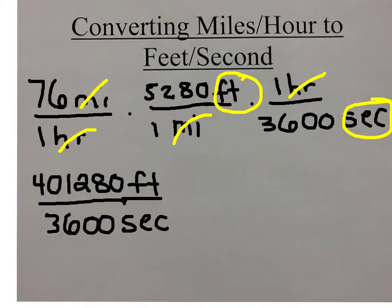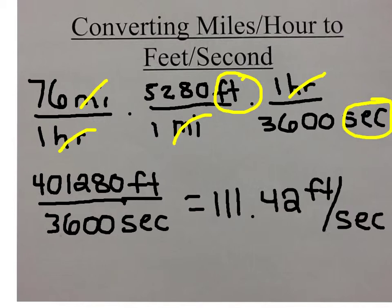When you multiply 76 by 5,280, you get 401,280 feet over the original 3,600 seconds. When you divide, you get 111.42 feet per second.